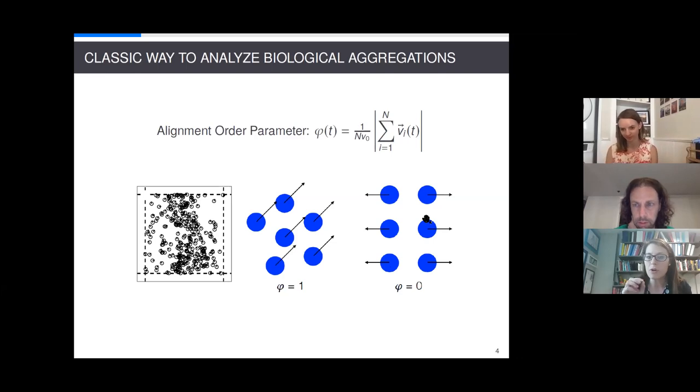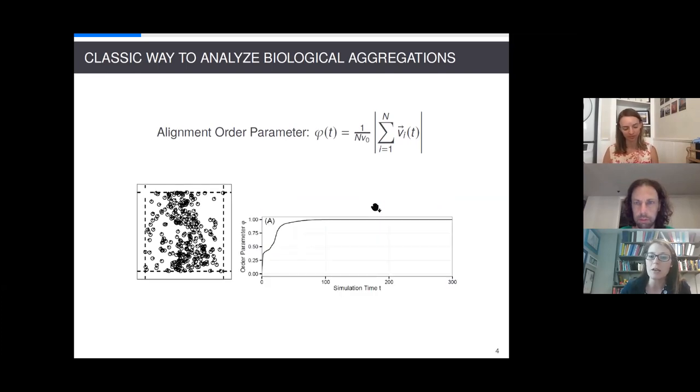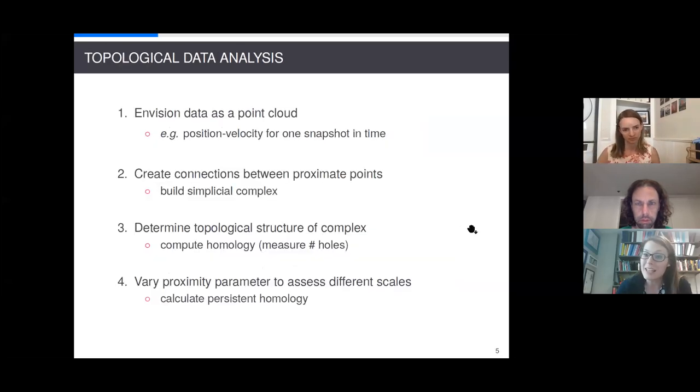Now, this is for a static moment in time. And what we might want to do is create a time series of the alignment order parameter and see over time what happens to a given set of data. And so, if this was the time series that resulted, we could see that the particles are not aligned at early times. And over a period of time, they do appear to align. So, that's one method of analyzing this large amount of data.